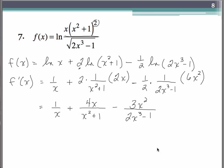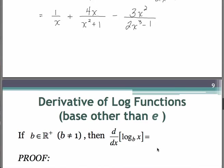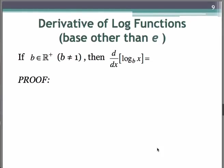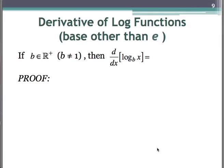Now let's consider the cases in which we have bases other than e. We're considering how to find the derivative of log base b of x, where b is a positive real number that cannot equal 1. Let me give you the rule first and then go through a little proof. The rule is: the derivative of log base b of x is going to be 1 over the natural log of b times x.